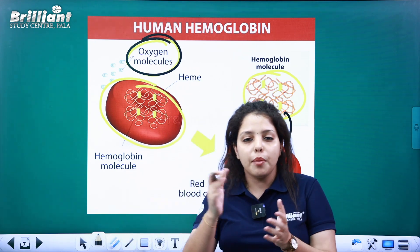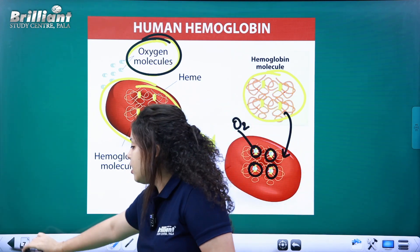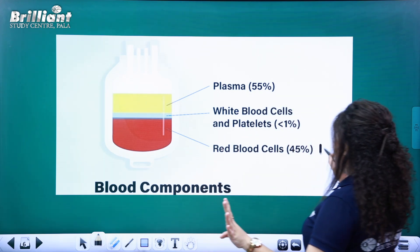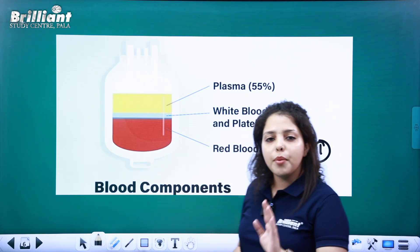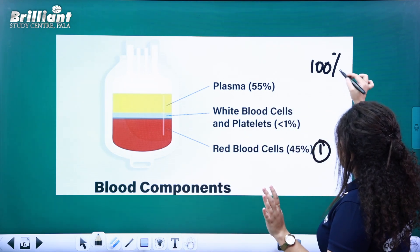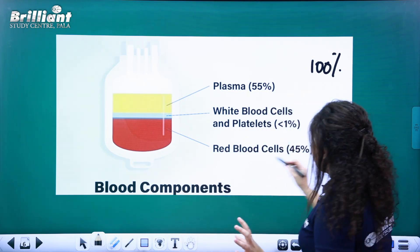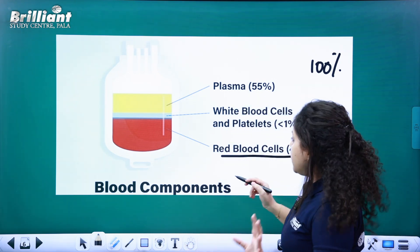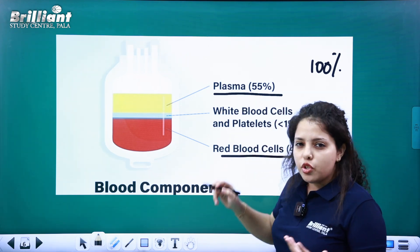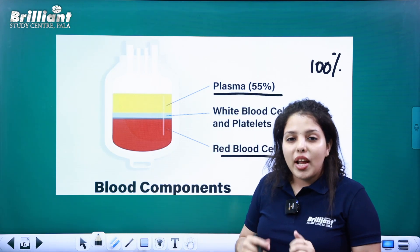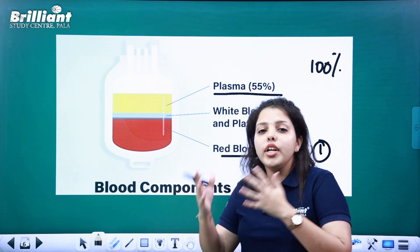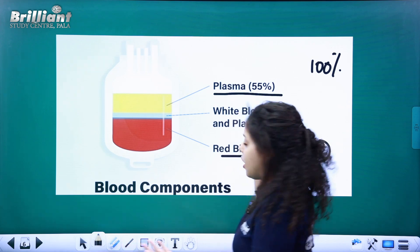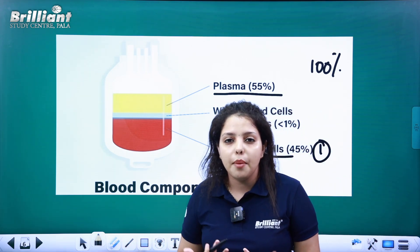In our blood, there are 4 components. One component we call RBC — that is 45% of blood. 55% we call plasma. Plasma is the fluid portion of blood.